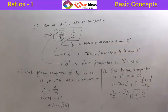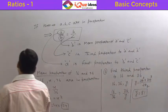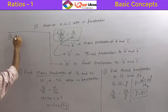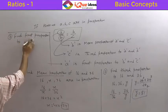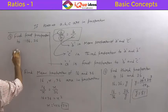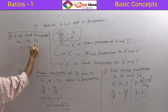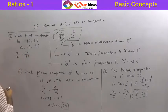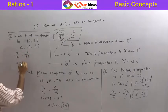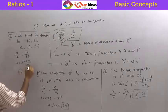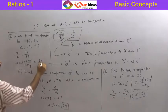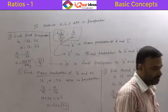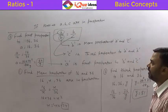We follow this proportionality rule. If asked to find the first proportion to 16 and 36, we place A at the beginning: A, 16, 36 are in proportion. So A upon 16 equals 16 upon 36, giving A equals 16 into 16 divided by 36, which is 64 by 9. Please understand that all three questions — mean, third, and first proportion — are different even though the numbers are the same.